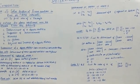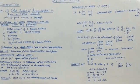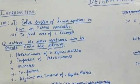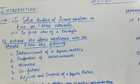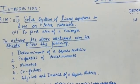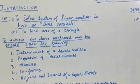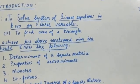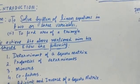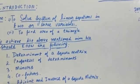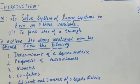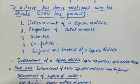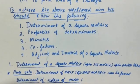This video is for class 12 students and the topic is determinants. Through determinants we can achieve two things: we can solve the system of linear equations in two or three variables quickly, and also we can find the area of a triangle if three vertices of the triangle are known.